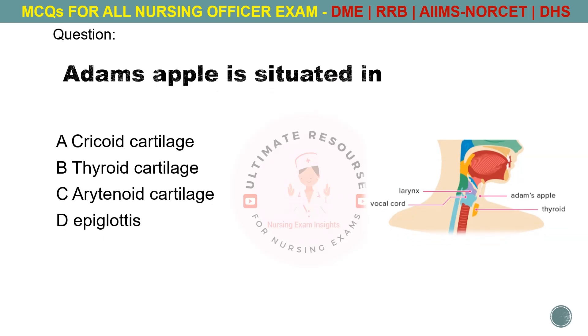Adam's apple is situated in. Options are A. Cricoid cartilage, B. Thyroid cartilage, C. Arytenoid cartilage, D. Epiglottis. The answer is B. Thyroid cartilage.